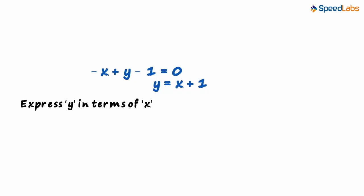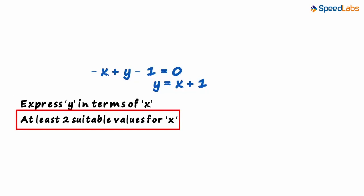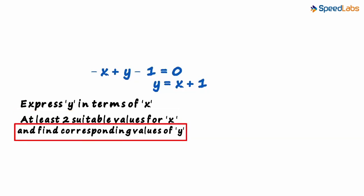The next step is very simple. Since we need at least two points, we choose at least two suitable values for x and find corresponding values of y. What this means is that we take some value for x, insert it in this equation and find the value of y. To get two points, we have to do this at least twice.